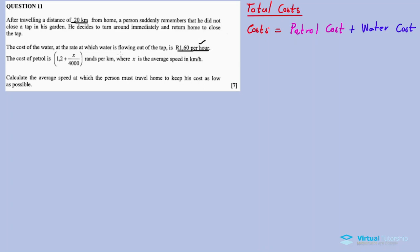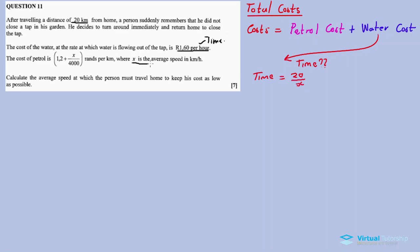To calculate the water cost, I need time. I need to calculate the time it takes to travel 20 kilometers. Time is calculated as distance over speed — the distance traveled is 20 kilometers divided by x, the average speed in kilometers per hour.